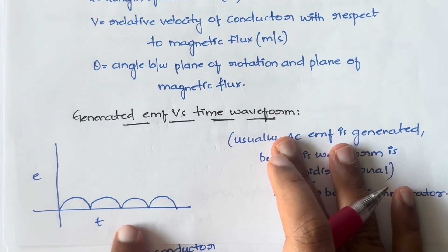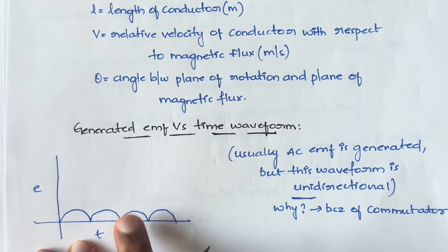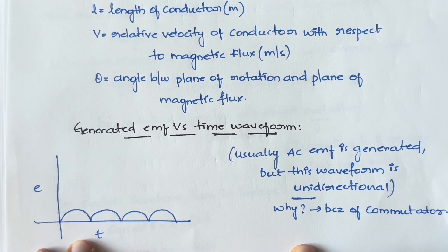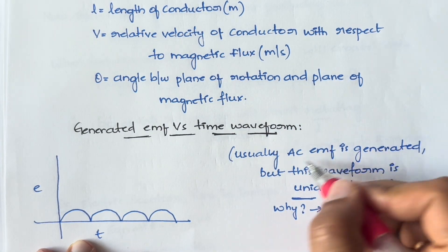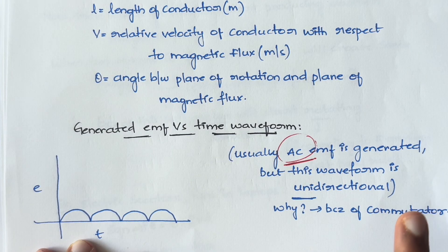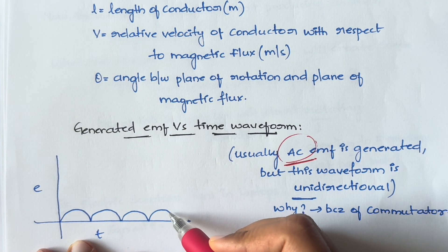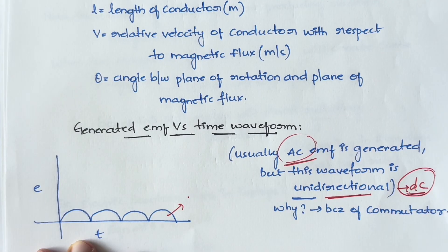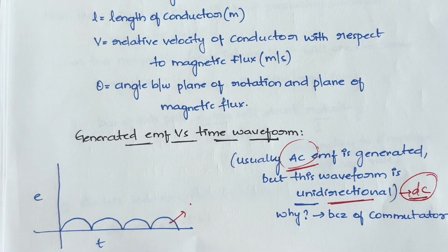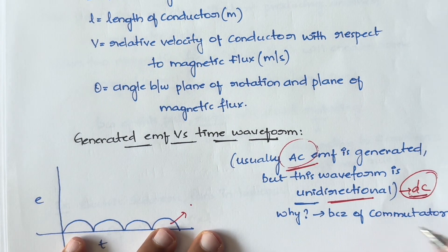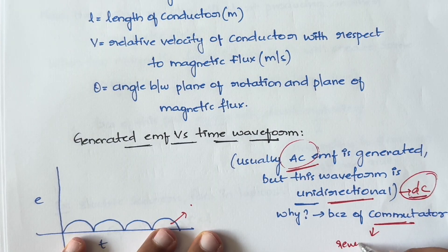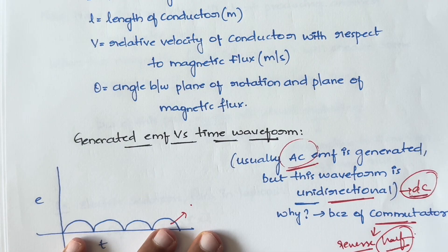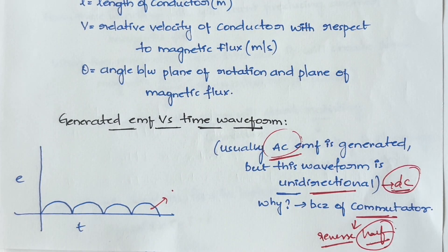For the EMF generated, if you plot the EMF versus time waveform you get a specific wave. Usually in these scenarios an AC EMF would be induced, but by looking at the waveform it is unidirectional — unidirectional means DC. This is because the commutators in the machine reverse the connections for every half rotation, making it unidirectional and therefore DC current.